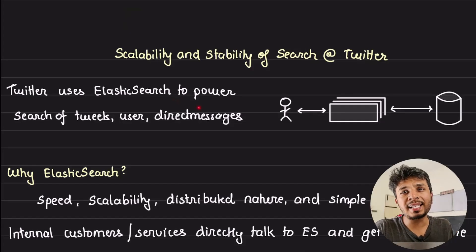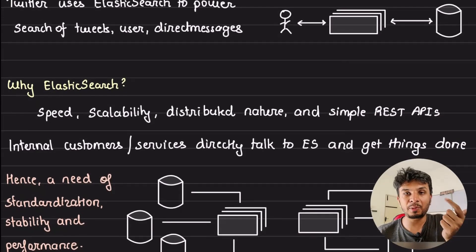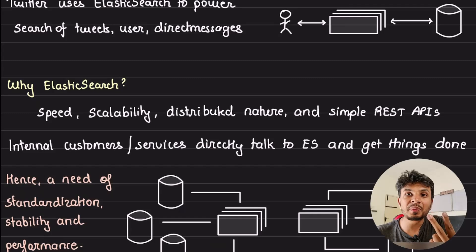So Twitter uses Elasticsearch to power search of their tweets, users, and direct messages. But why Elasticsearch? Elasticsearch provides speed, it provides scalability, it is distributed in nature which means scaling out is just adding more nodes, and more importantly it provides very simple REST interface to interface with it. Because of the simple REST APIs, you just need a simple HTTP client to talk to Elasticsearch servers and it makes it super easy to do so.